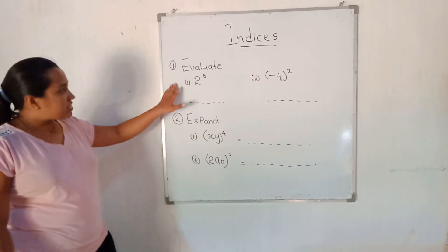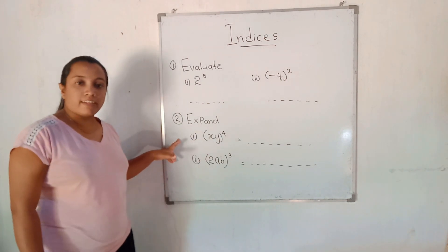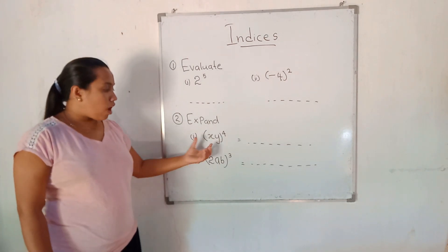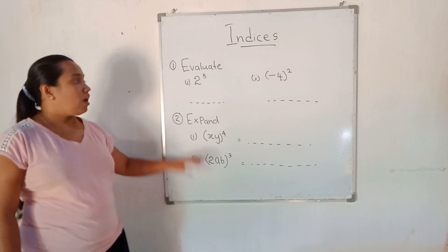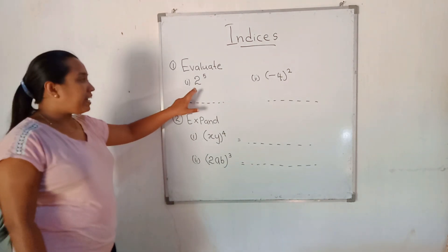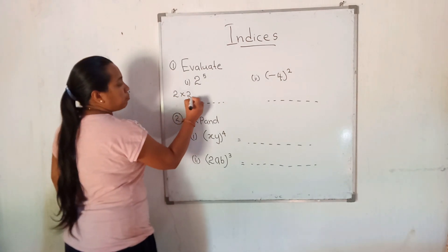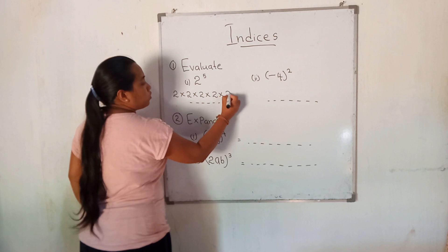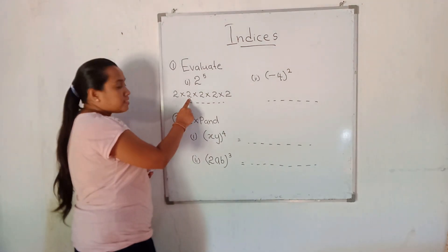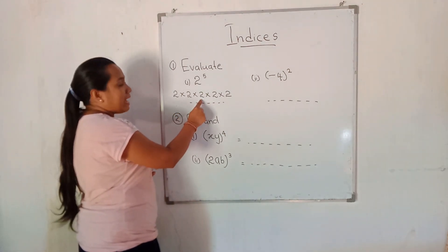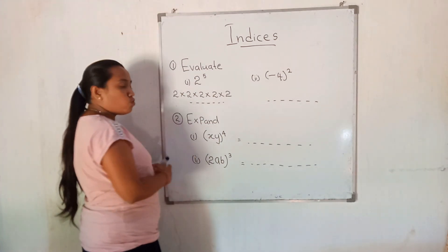There are two questions. The first is to evaluate — find the value of the given powers. The second is to expand — write the powers in expanded form. To find the value of 2 to the power 5, write it as 2×2×2×2×2. Then: 2×2=4, 4×2=8, 8×2=16, 16×2=32. So the value of 2 to the power 5 is 32.